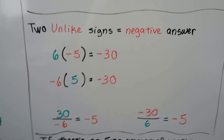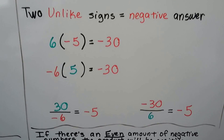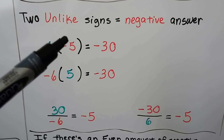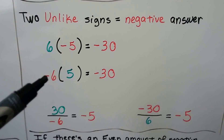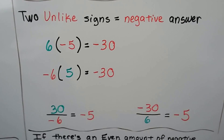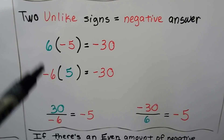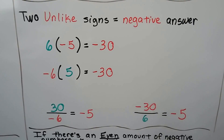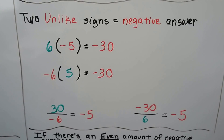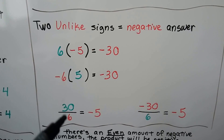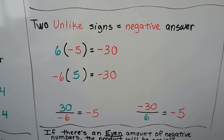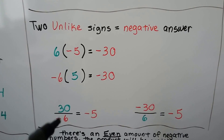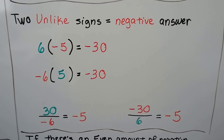Now we have two unlike signs, so we're going to get a negative answer. Positive 6 and negative 5 gives negative 30. Or negative 6 and positive 5 is still negative 30, because they don't have the same sign. In division, we're going to get a negative answer regardless of which one is positive or negative as the numerator or denominator — they have different signs, so the answer is negative.